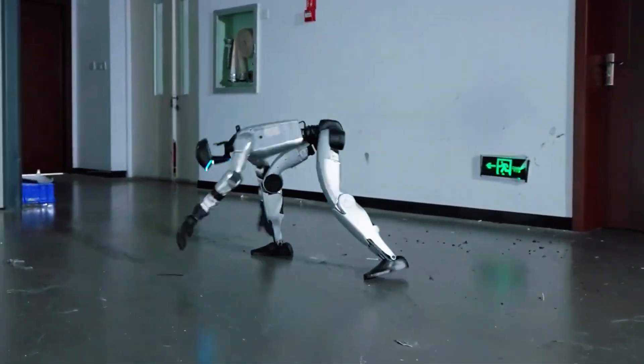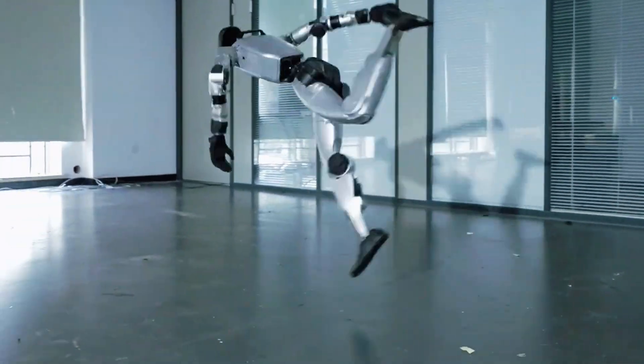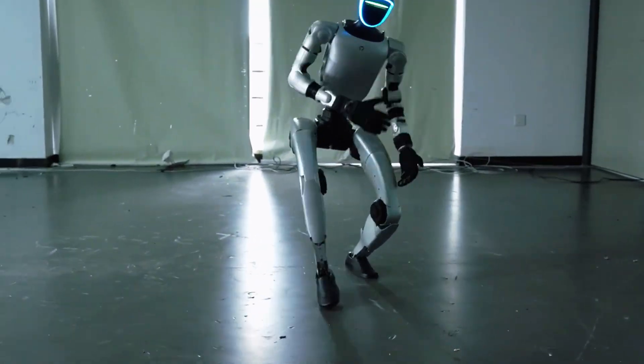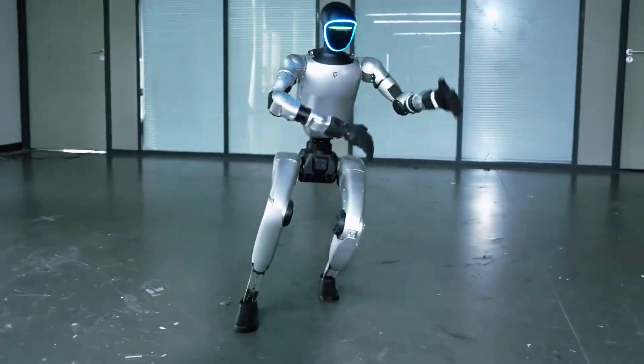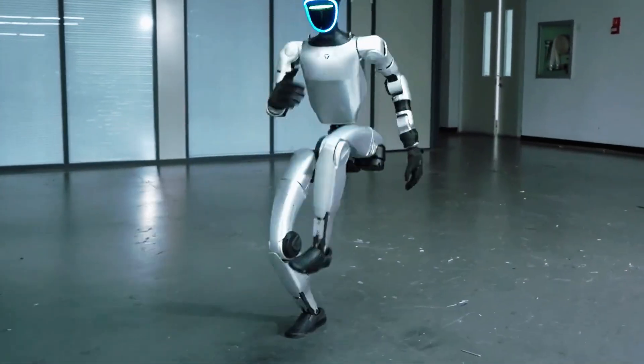Now the fun part is imagining where this goes. Disaster zones, factories, even at home. Picture a robot assistant slipping on a rug, but recovering instantly without spilling your coffee. That's the kind of reliability this breakthrough hints at.